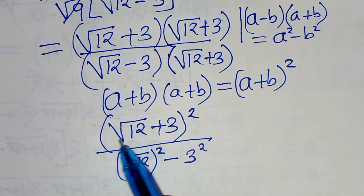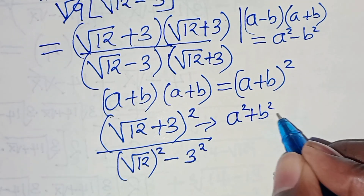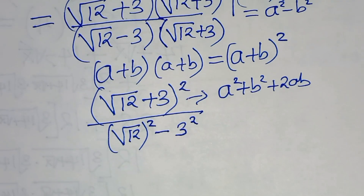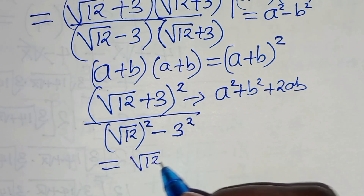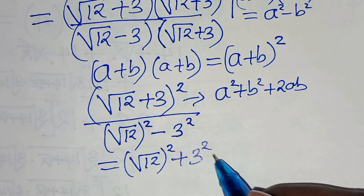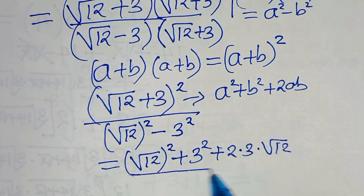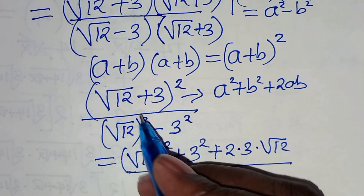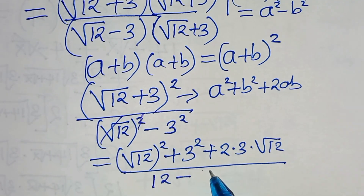Applying the identity (a+b)² = a² + b² + 2ab in the numerator, we have square root of 12 raised to the power of 2, plus 3 squared, plus 2 times 3 times square root of 12, divided by — in the denominator — square root of 12 squared, which is 12, minus 3 squared, which is 9.